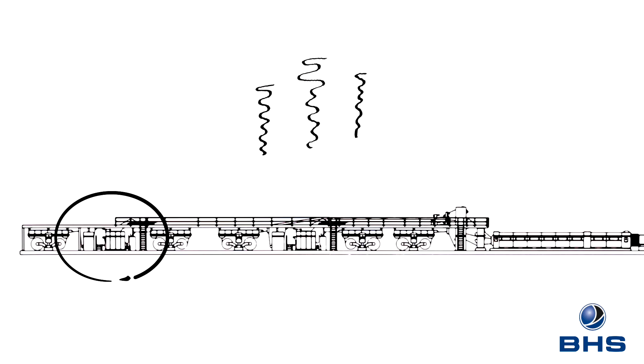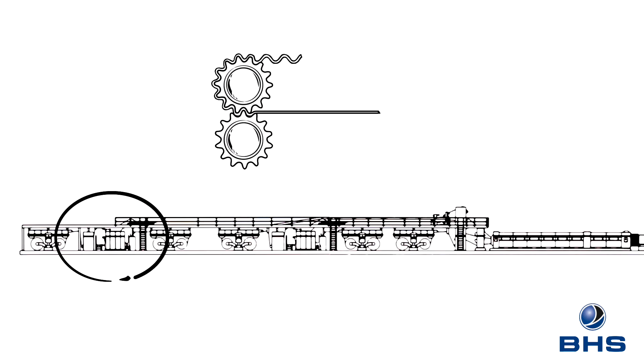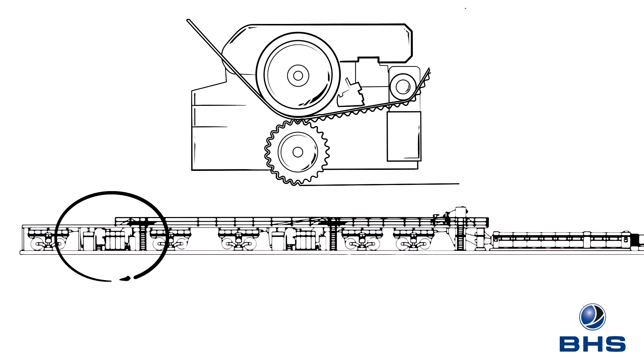The preheated paper, known as corrugated medium, then feeds into the single facer, where two steam-heated corrugating rolls give it its corrugated form. In the glue unit of the single facer, each flute tip then has an ultra-thin coat of starch glue applied to it. The fluting is then glued to the second preheated paper, known as the liner.